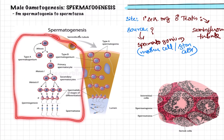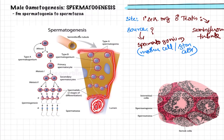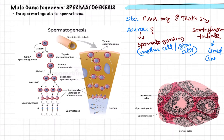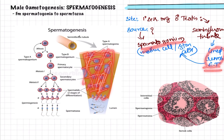Now let us look at the flow chart for better understanding. As you can see here, this is the seminiferous tubule — if you take a section and enlarge it, this is how it looks. The inner part is the lumen, and this is all the lining epithelium. The seminiferous tubule is generally lined by germinal epithelial tissue, and this germinal epithelium contains spermatogonium cells.